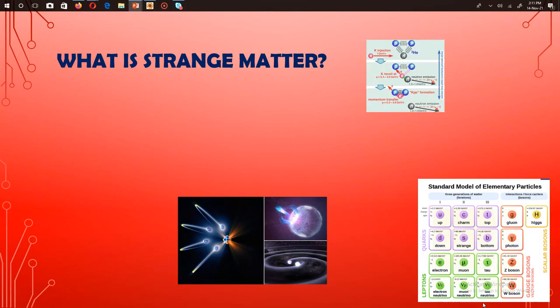First we have to learn what is strange matter. Strange matter is made up of strange quarks, also known as hyperons. Quarks are basically elementary particles which form stuff like protons, neutrons and other stuff.